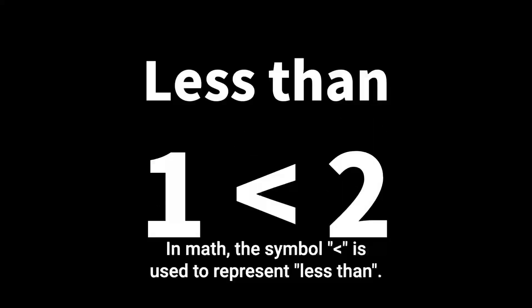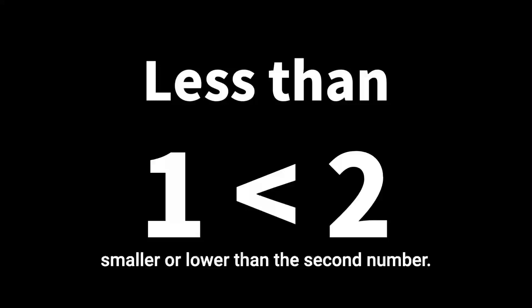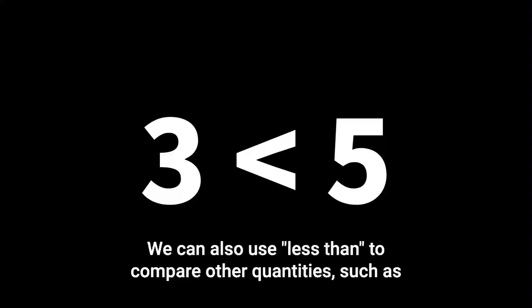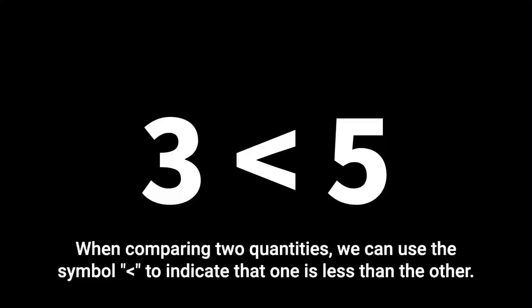In math, the symbol less than is used to represent less than. When we say that one number is less than another, it means that the first number is smaller or lower than the second number. For example, if we say that three is less than five, we mean that the number three is smaller than the number five. We can also use less than to compare other quantities, such as variables, expressions, or fractions. When comparing two quantities, we can use the less-than symbol to indicate that one is less than the other.